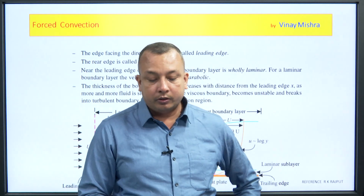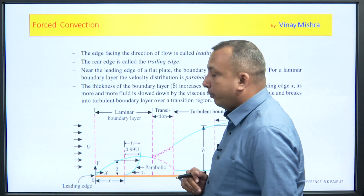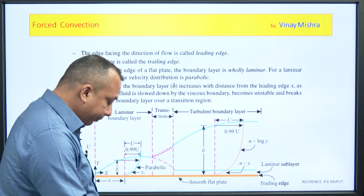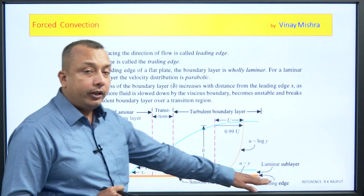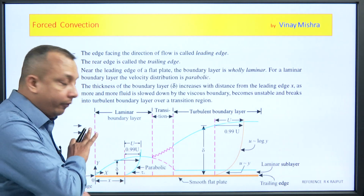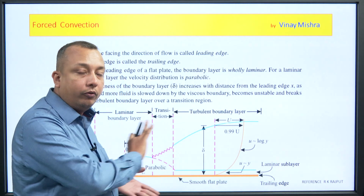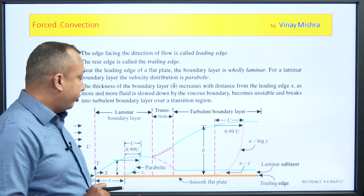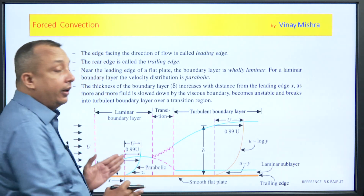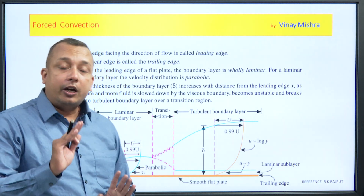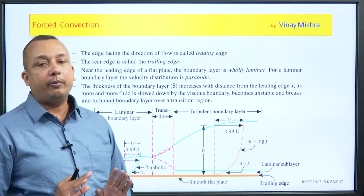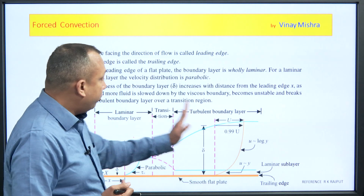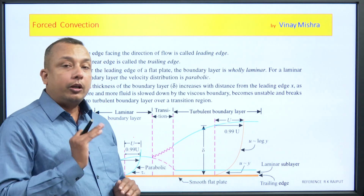If we talk about the boundary layer, we will talk about this discussion. This is our flat plate. This leading edge is known as the trailing edge. Certain space on our flow is laminar, then we talk about turbulent flow.